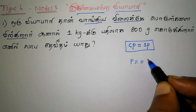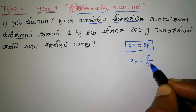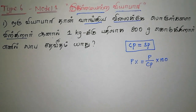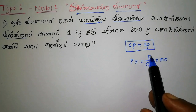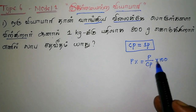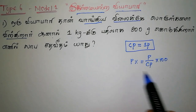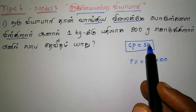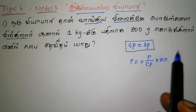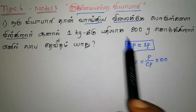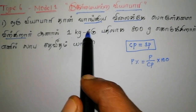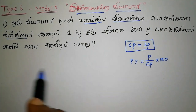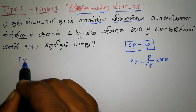Profit percentage is equal to profit by cost price into 100. This is a total of 100. The profit percentage equals profit by cost price into 100. After the profit percentage, we pay the price of the weight. What is the formula for profit percentage?